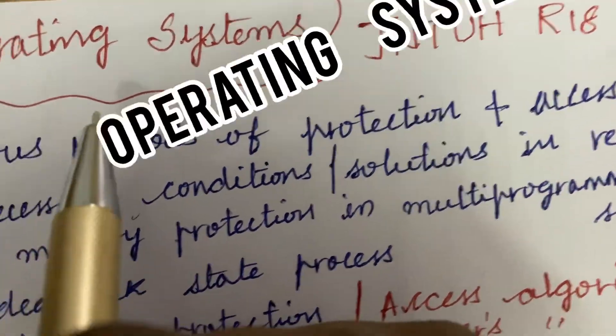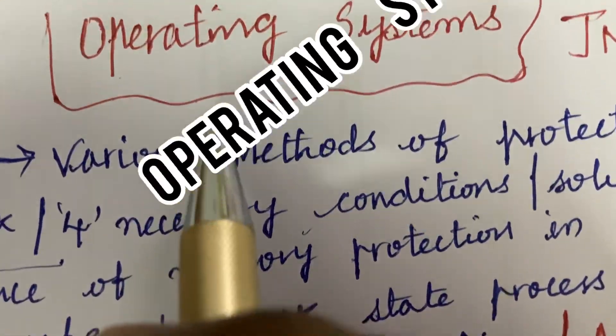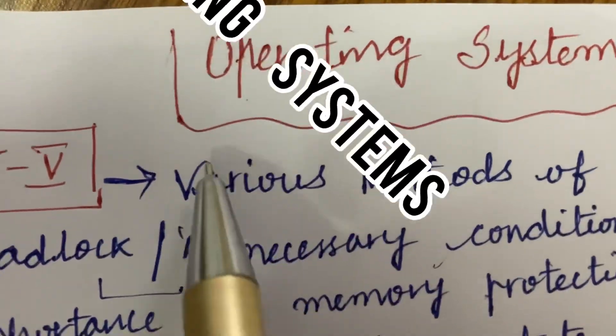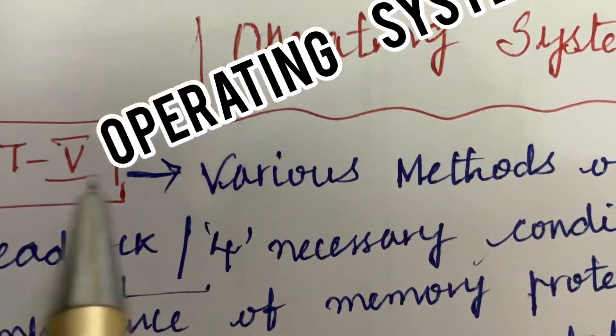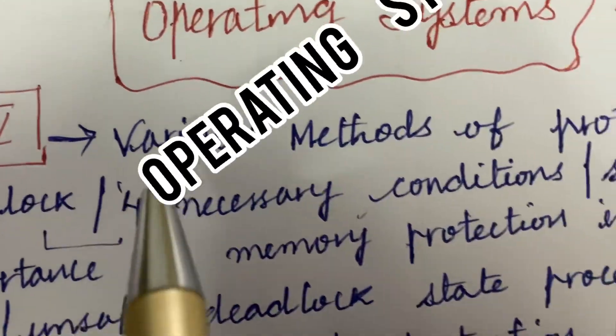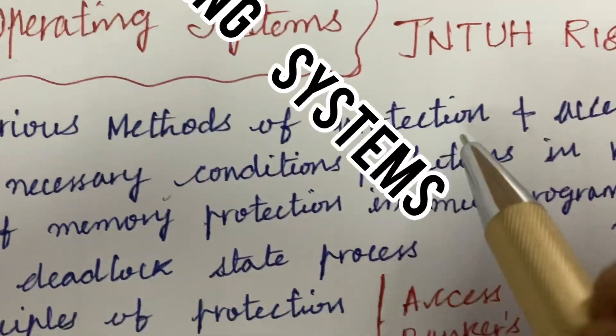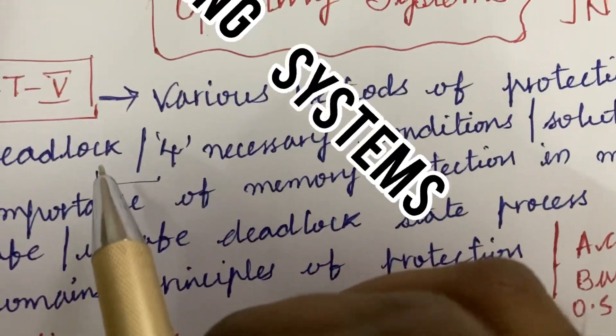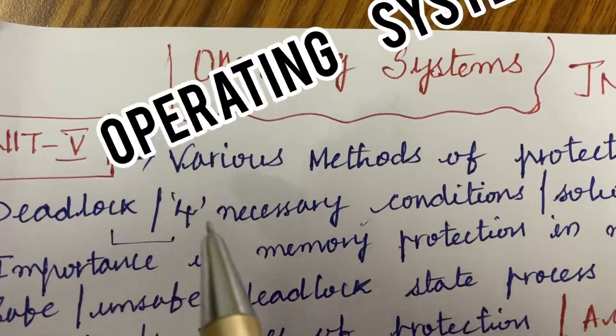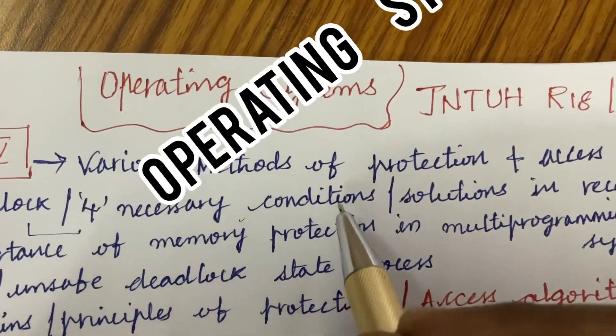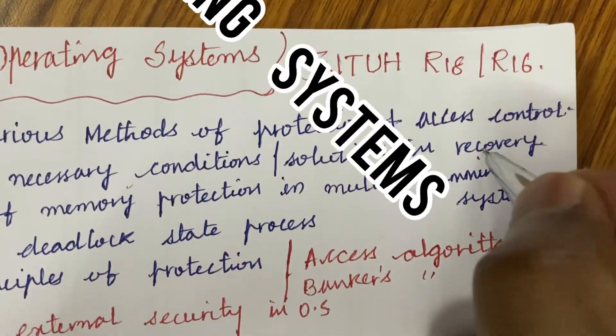I have come up with certain gunshot questions. The first and foremost question I have taken into consideration is from Unit 5: list out the various methods of protection of access control, as well as define a deadlock and four necessary conditions and solutions in recovery.